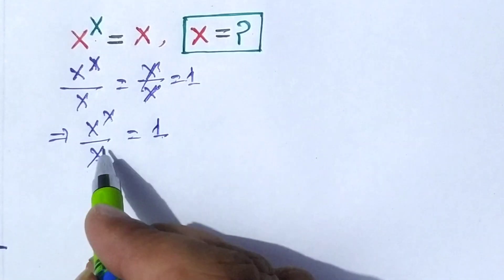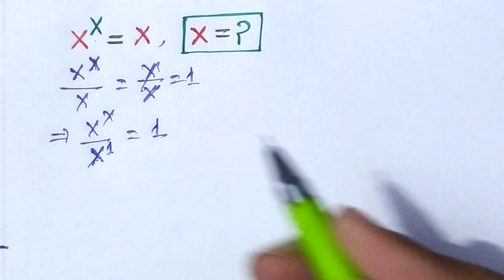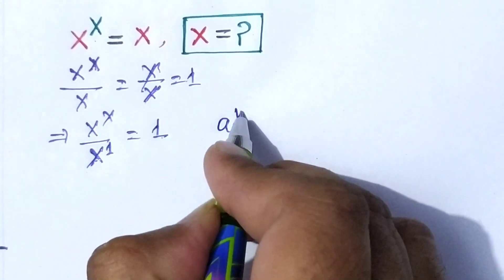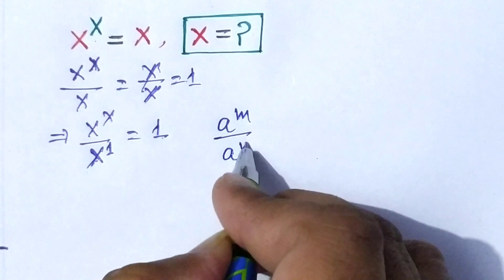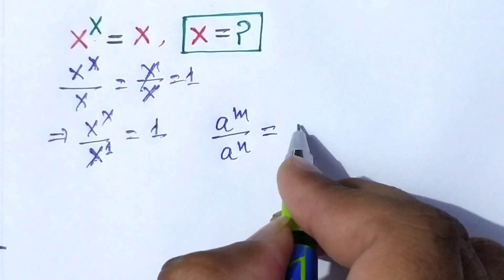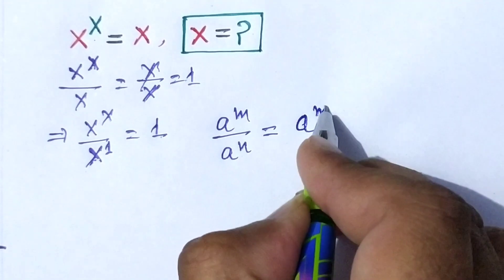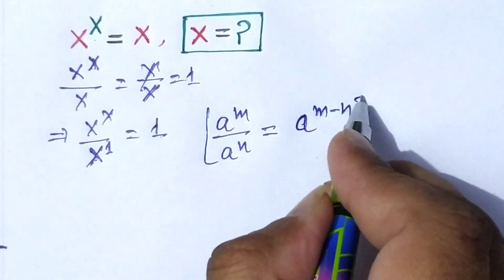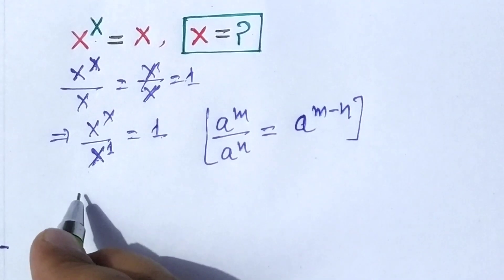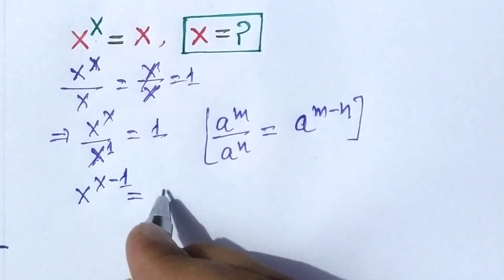Here, the base is the same but the power is different. x can be written as x to the power of 1. We know that when the base is the same, a to the power of m divided by a to the power of n equals a to the power of m minus n. By using this formula, we can write this equation as x to the power of x minus 1 is equal to 1.